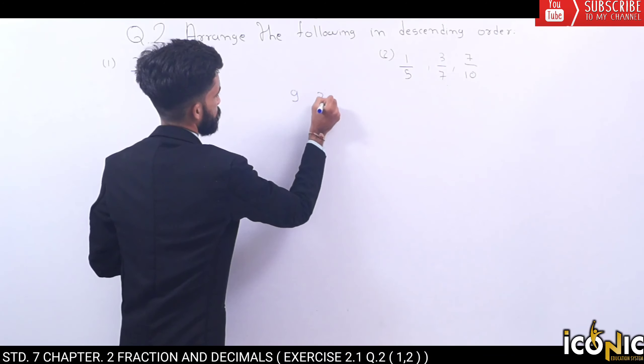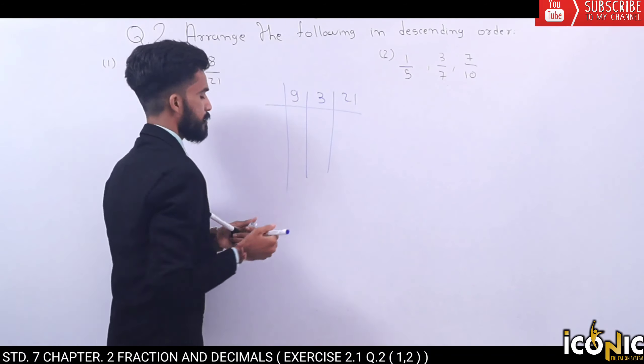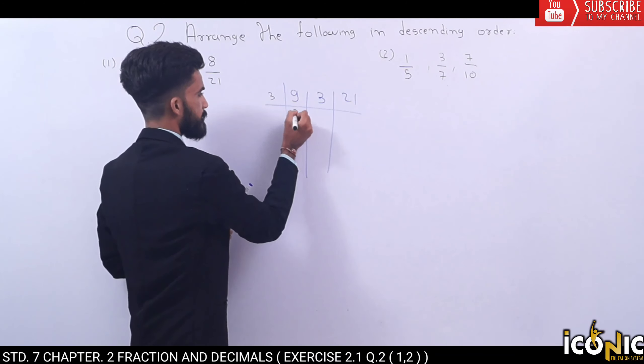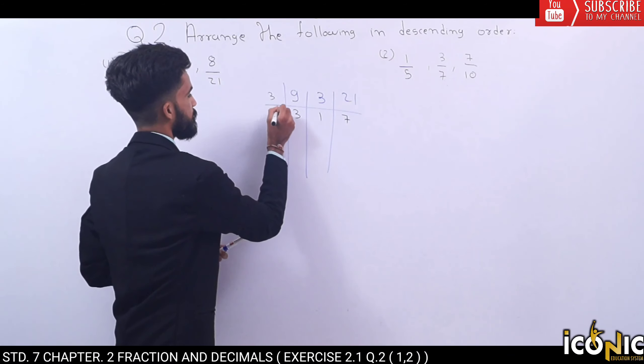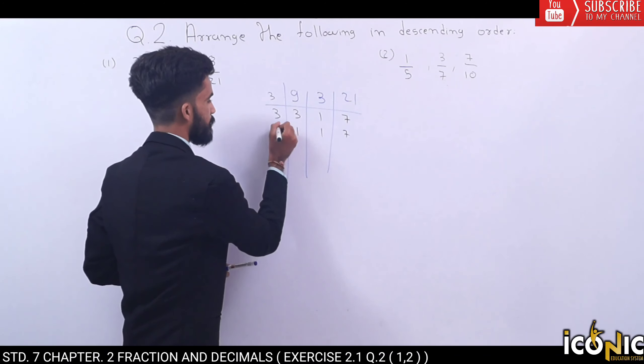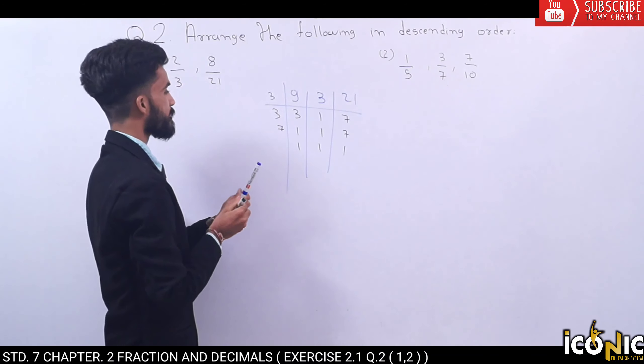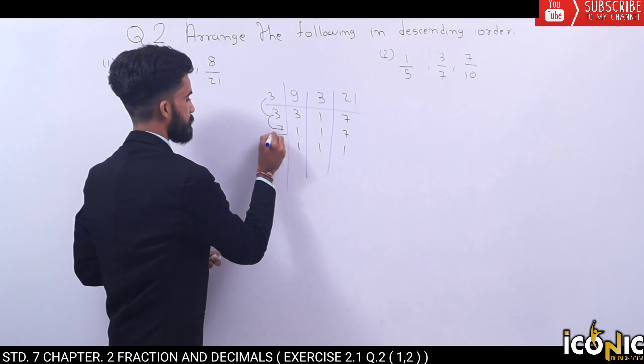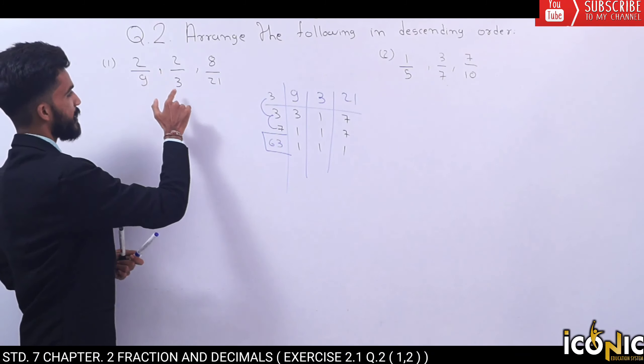Here we need to make the denominator same. We have 9, 3, and 21. We need to find the LCM. 3 times 9, 7 times 21. We have 3, 3, 7, 7. So the LCM will be 21, 21, 3, 63. So what is LCM? 63.